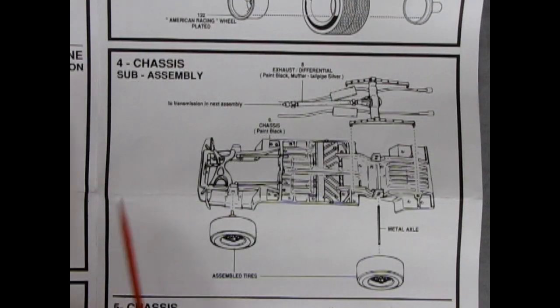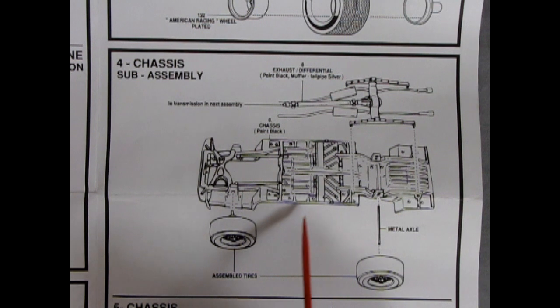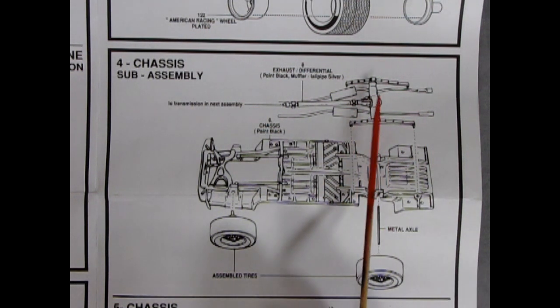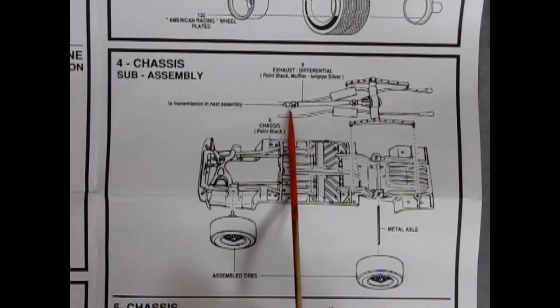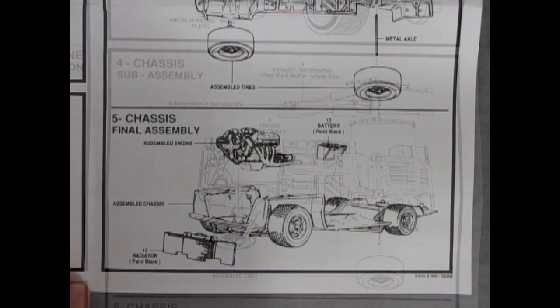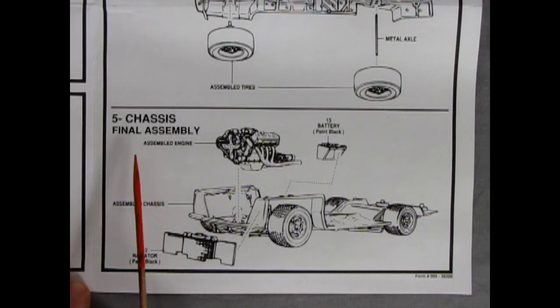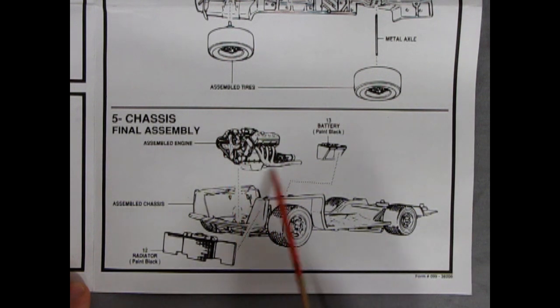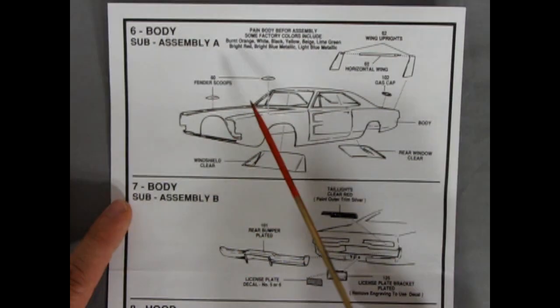Section 4 shows us the chassis sub-assembly. If you follow this and last week saw the Dukes of Hazzard edition, you'll see that this is the exact same chassis pan with pretty much everything molded in place. Then you get your drop-down rear differential, exhaust pipes and driveshaft all as one complete unit. Panel 5 is showing our chassis final assembly with the 427 completed engine dropping into the chassis pan, the battery going up on the wheel arches here, and our radiator gluing to the front. Panel 6 is showing the body sub-assembly.